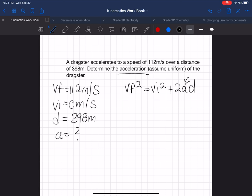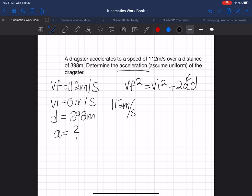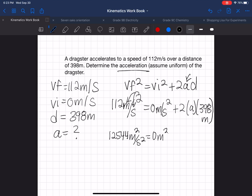So let's write that down and isolate for a. We're going to fill this in here: 112 m/s squared equals vi zero m/s squared plus 2a and distance 398 meters. We're going to isolate for a, but get these answers here first, which is 12,544 meters squared over second squared because we squared the number and the units here. Zero m squared over s squared plus 796 meters times a.